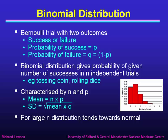The binomial distribution is characterised by n, the number of trials, and p, the probability of success. It has a mean equal to n times p, and a standard deviation equal to the square root of the mean times q. For large n — for large numbers of trials — the binomial distribution tends towards the normal distribution.